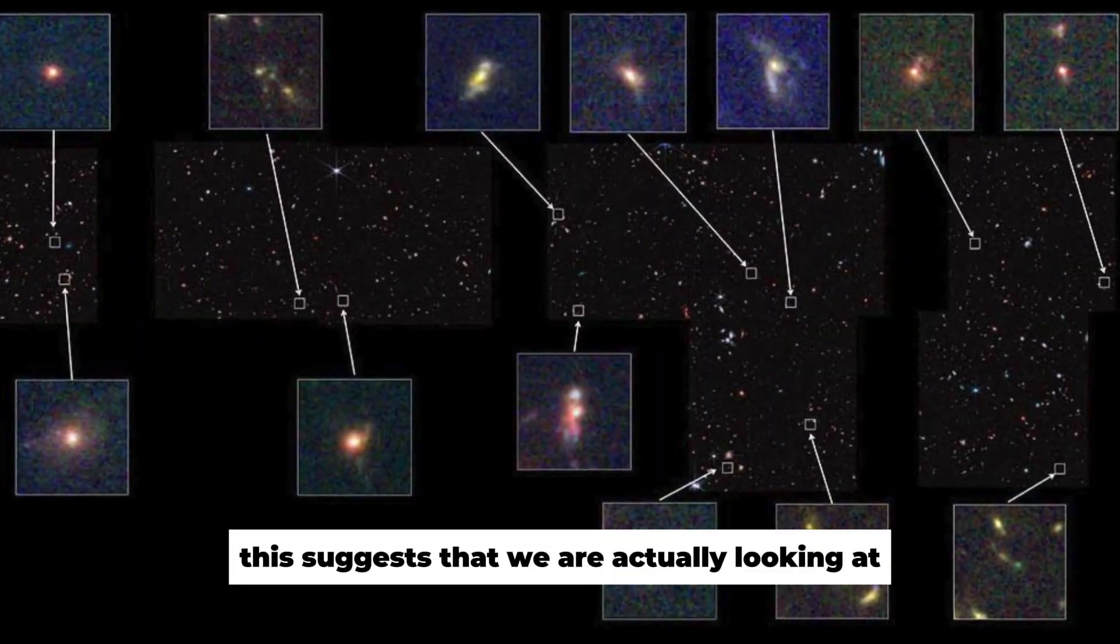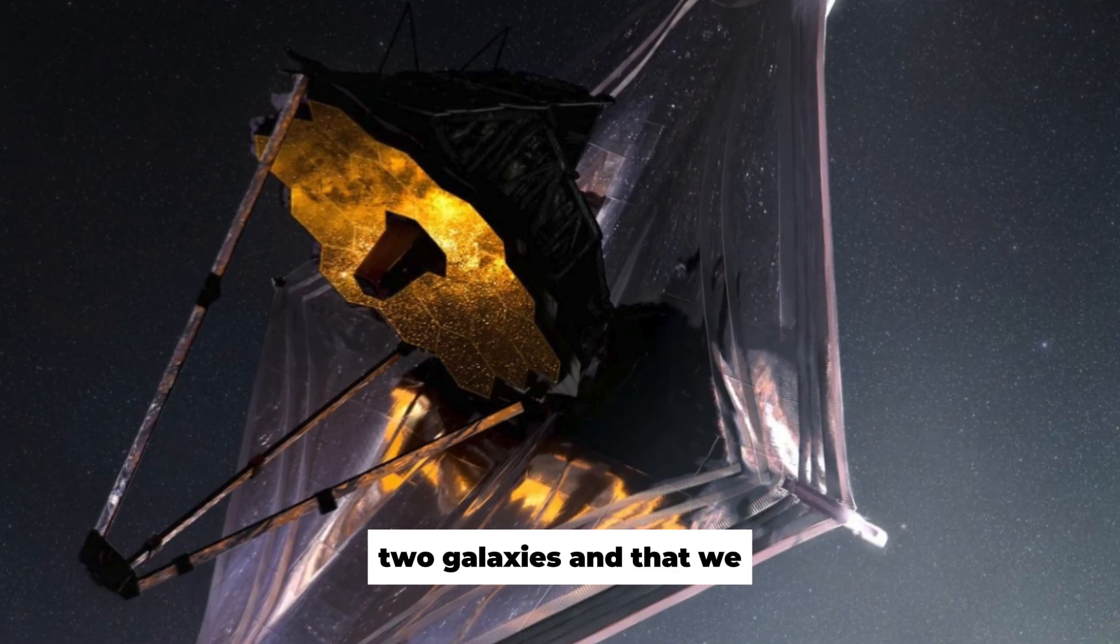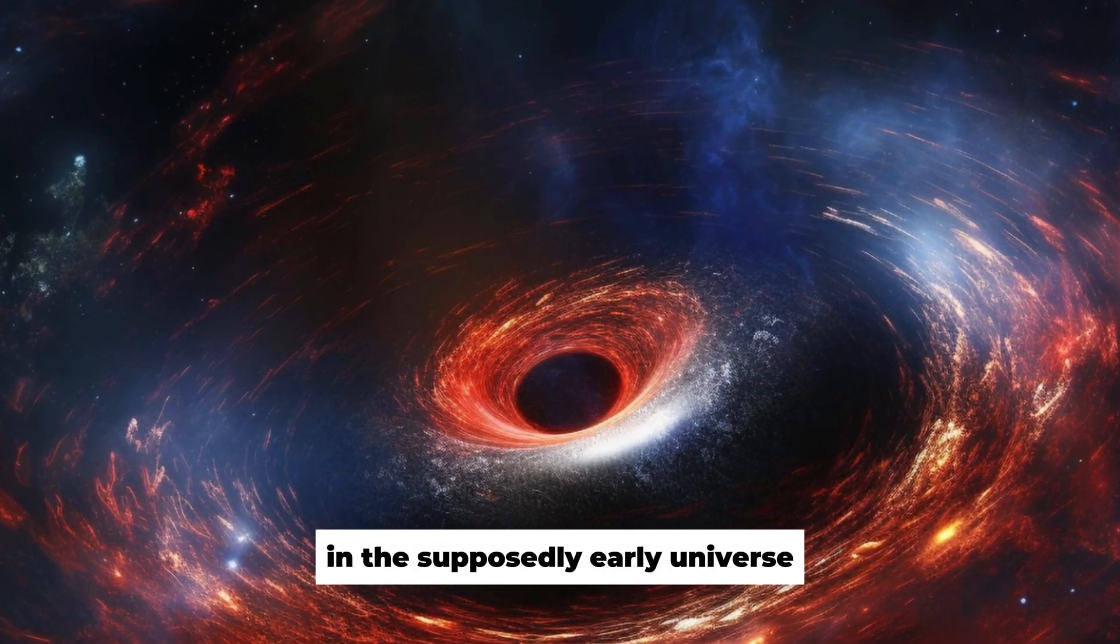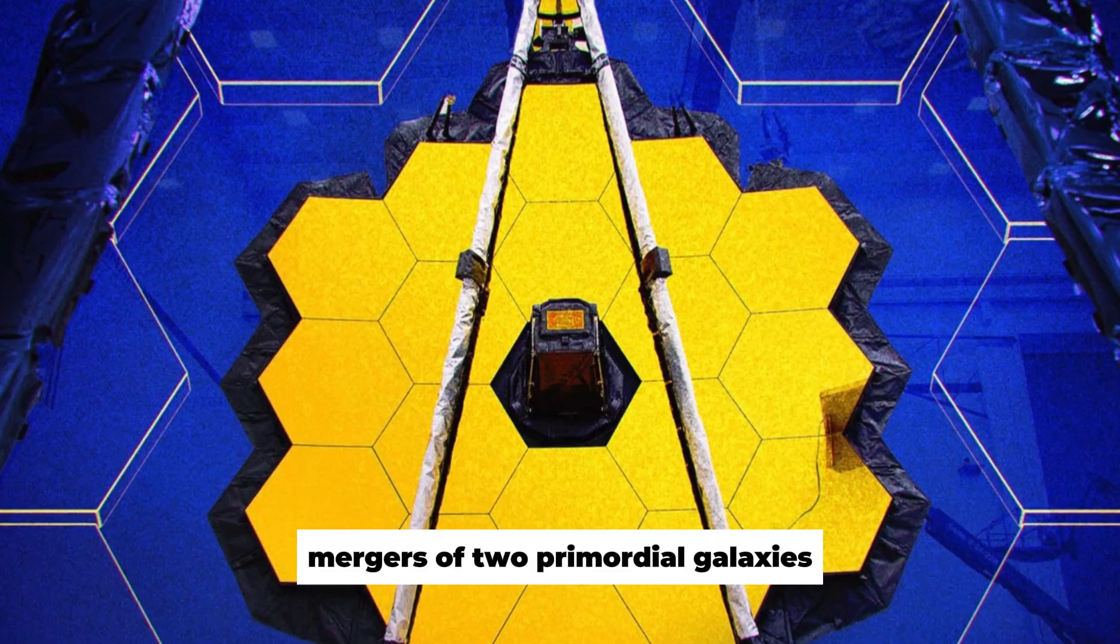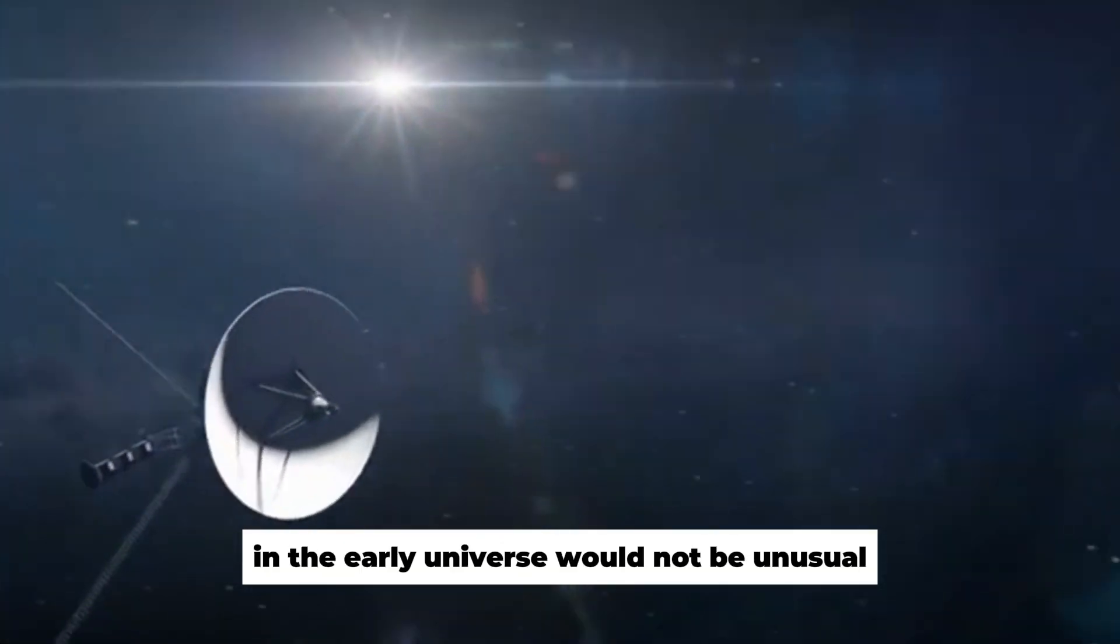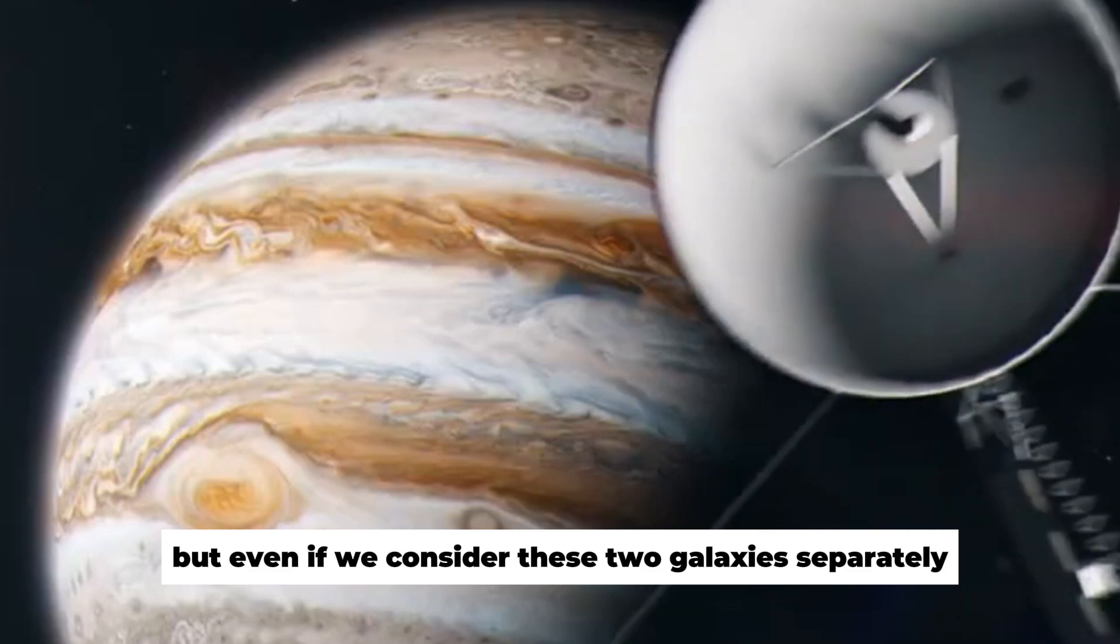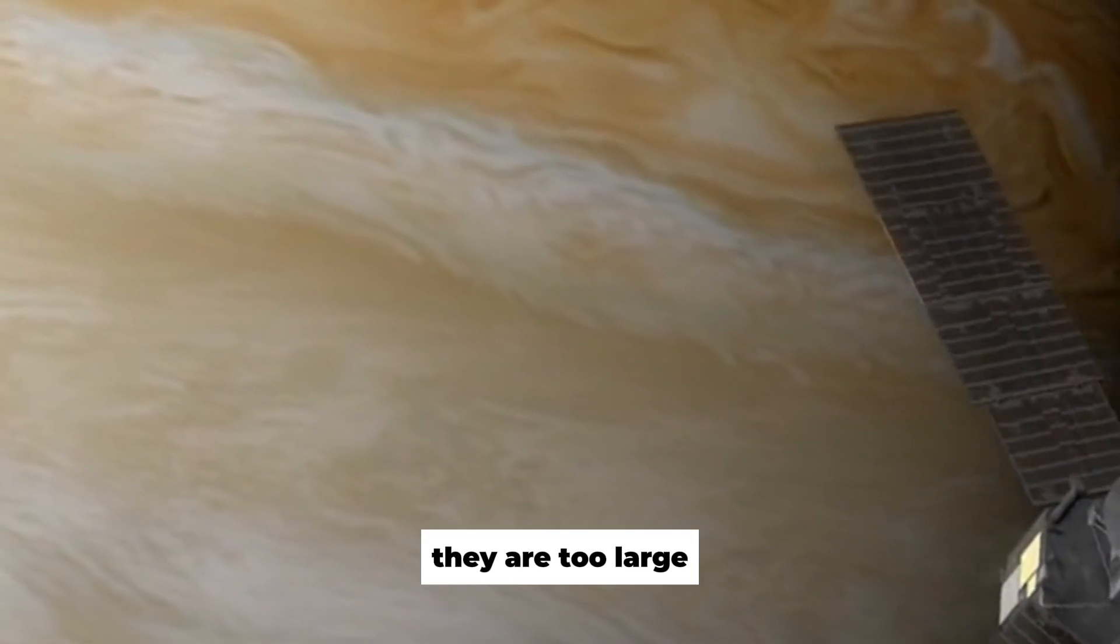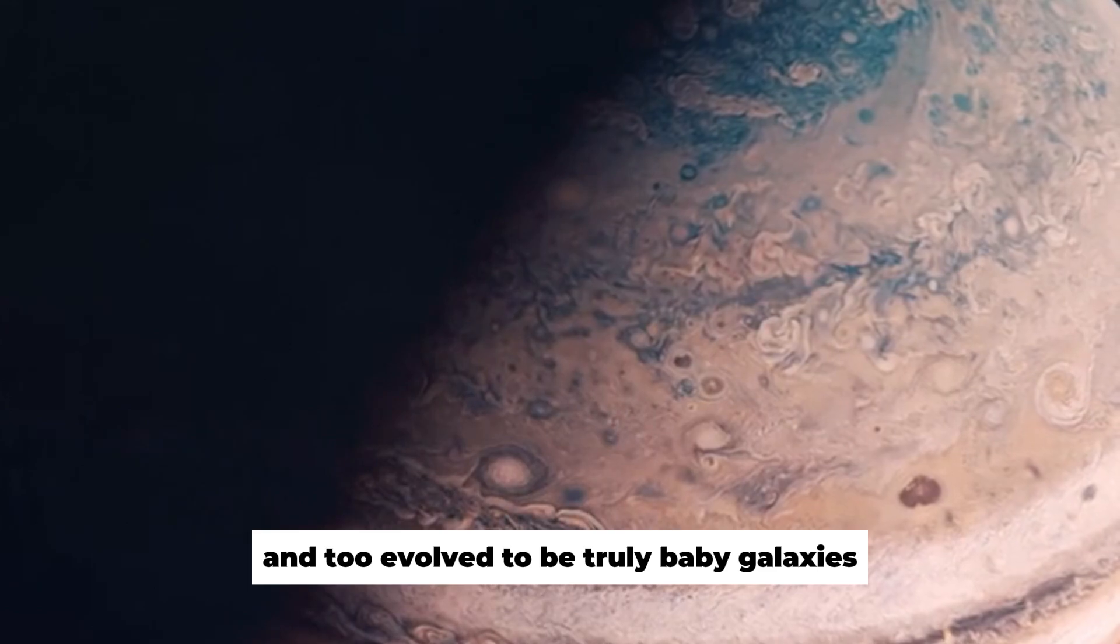This suggests that we are actually looking at two galaxies and that we are witnessing a galaxy merger in the supposedly early universe. Mergers of two primordial galaxies in the early universe would not be unusual. But even if we consider these two galaxies separately, they are too large and too evolved to be truly baby galaxies in a young cosmos by our old standards.